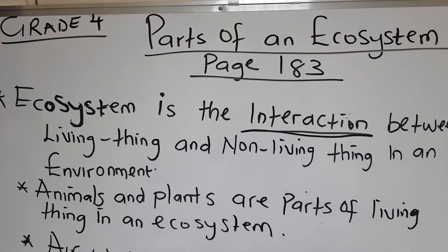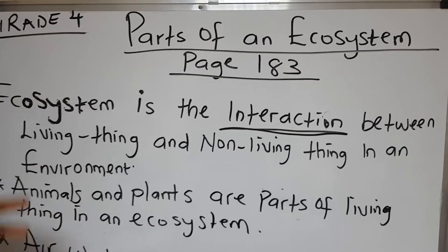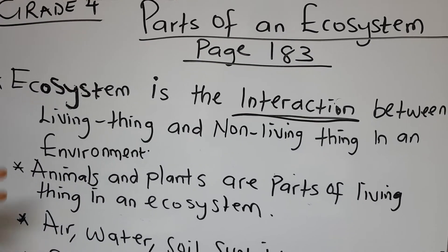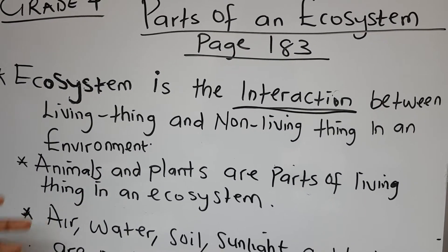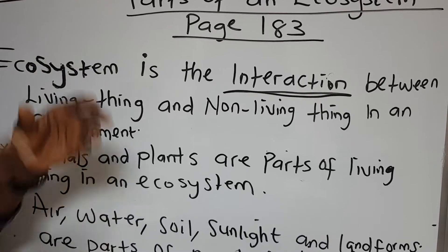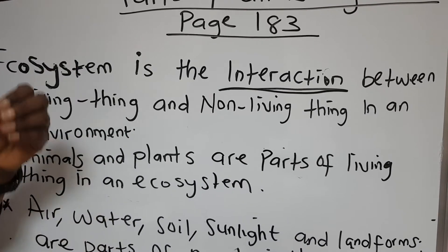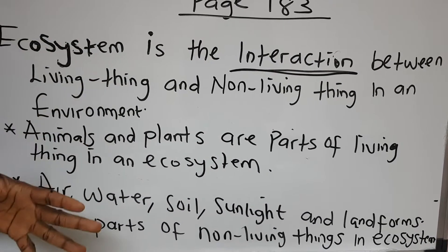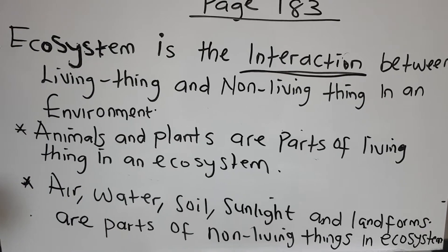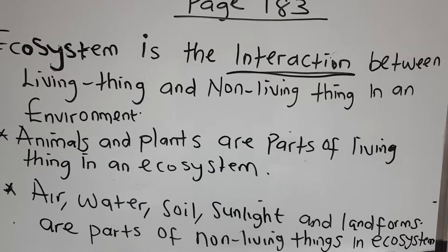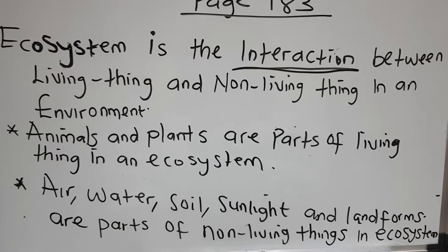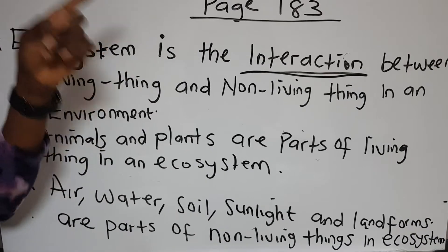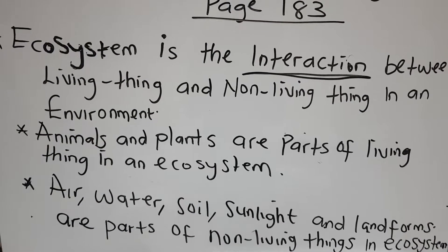Do not forget that an ecosystem can be large and an ecosystem can be small. Like we have the ocean — the ocean is large and is part of an ecosystem. Even the park, the garden that you all sit near your house, is part of an ecosystem because there is an interaction between you and the garden, you and the park. You went to play in the park.